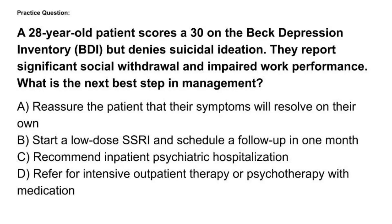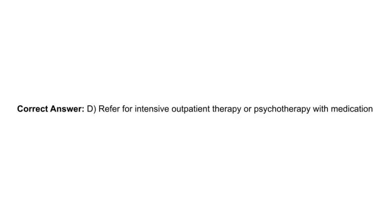A 28-year-old patient scores a 30 on the Beck Depression Inventory but denies suicidal ideation. They report significant social withdrawal and impaired work performance. What is the next best step? A. Reassure the patient. B. Start a low-dose SSRI and follow up in one month. C. Recommend inpatient psychiatric hospitalization. D. Refer for intensive outpatient therapy or psychotherapy with medication. Correct answer: D. A BDI score of 29 to 63 is severe depression requiring immediate intervention. Without suicidal ideation, inpatient hospitalization is not necessary, but aggressive outpatient management is needed.